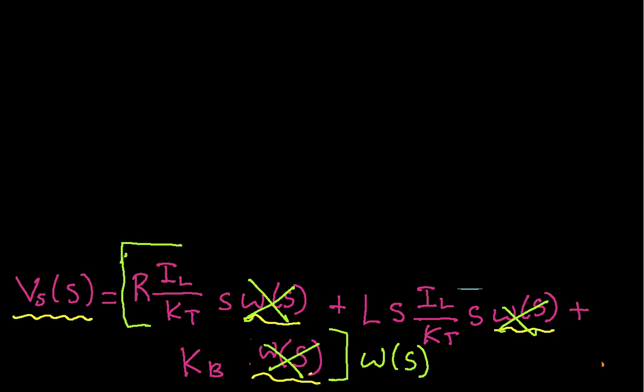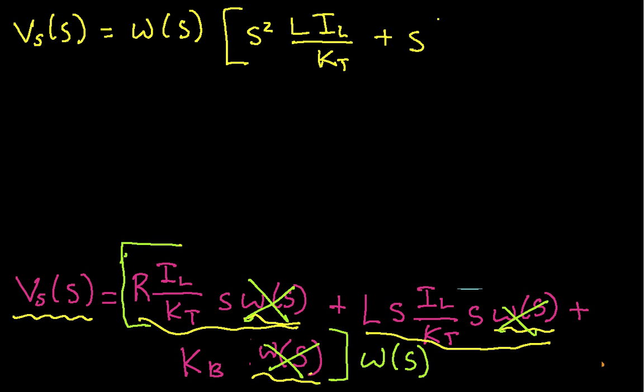Okay, so I have this expression, and if I clean it up a little bit, I can write this as v sub s is equal to omega of s times s squared l i sub l over kt plus s times r i sub l over kt plus kb. So this thing in the square brackets, this guy here, you can see is actually a polynomial in s.